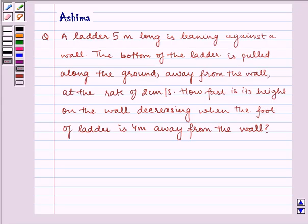Hello and welcome to the session. Let us understand the following question today. A ladder 5 meters long is leaning against a wall. The bottom of the ladder is pulled along the ground away from the wall at the rate of 2 cm per second. How fast is its height on the wall decreasing when the foot of the ladder is 4 meters away from the wall?